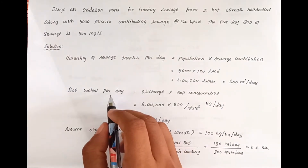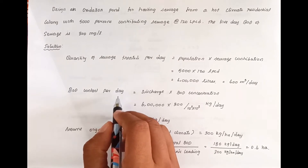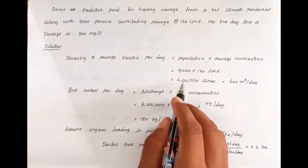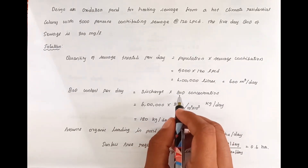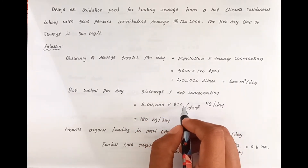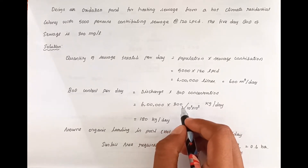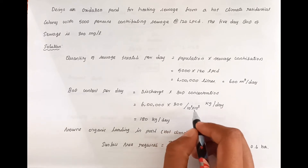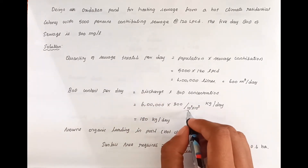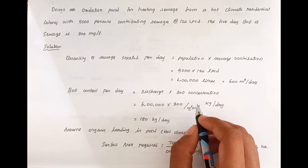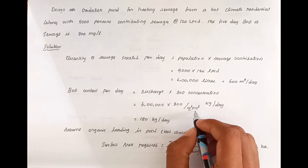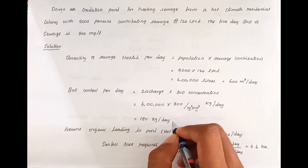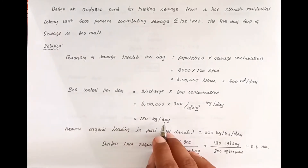Next, we have to find out the BOD content per day. BOD content per day equals discharge multiplied by BOD concentration. Discharge per day is 6 lakh liters, and BOD concentration is 300 mg per liter. Converting units (dividing by 10³ × 10³), the BOD load works out to 180 kg per day.